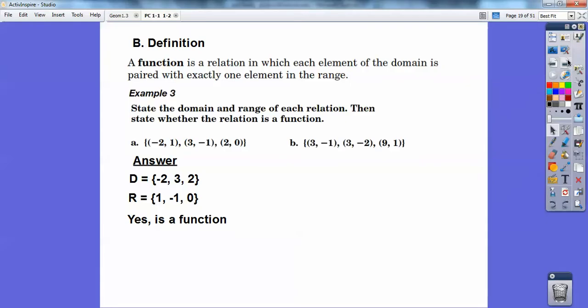Here's number B. So negative 3, negative 3. Look, negative 3 repeats. I know right now it's not a function. So your domain is negative 3 and 9. And your range is negative 1, negative 2, and 1. And it's not a function because your 3's repeat. Again, your y's can repeat, your x's can't repeat.